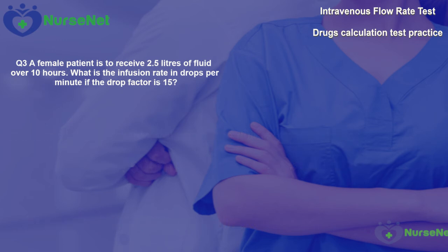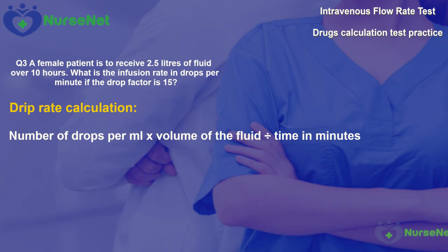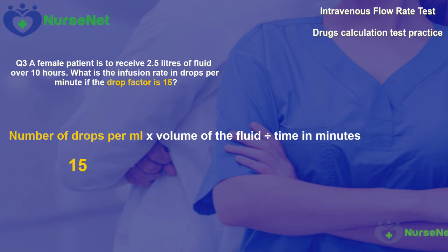Question 3. A female patient is to receive 2.5 litres of fluid over 10 hours. What is the infusion rate in drops per minute if the drop factor is 15? Again, we use the drip rate formula: drops per millilitre multiplied by volume divided by time in minutes. We have 15 drops per millilitre. The volume is 2.5 litres, which we convert to millilitres: 2.5 multiplied by 1,000 gives us 2,500 millilitres.